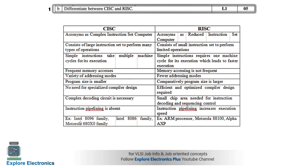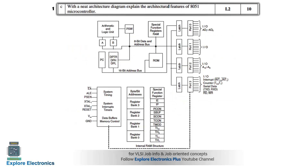Examples of CISC processors are the Intel 8096 family, Intel 8086 or 8085, and Motorola 680x0 family. Intel microprocessors are under CISC. Examples of RISC processors include ARM processors, Motorola 88100, Alpha, and AXP. These are the differences between CISC and RISC.